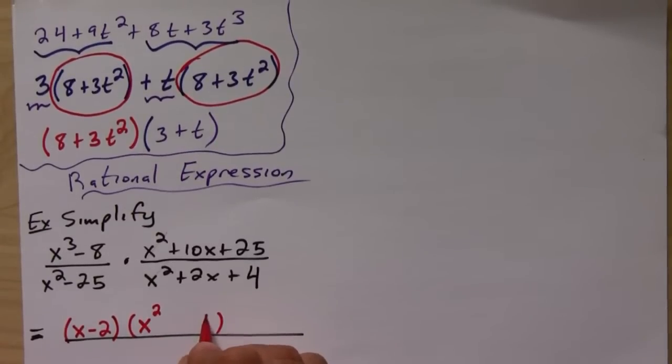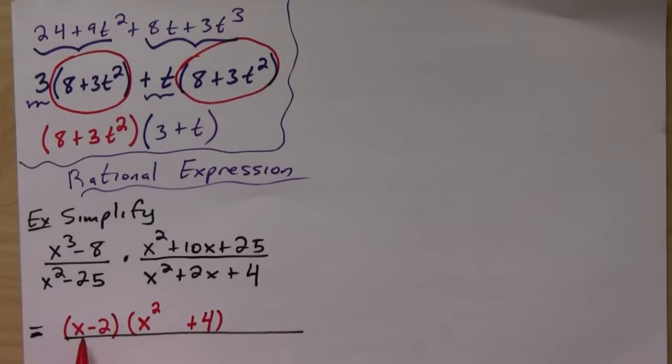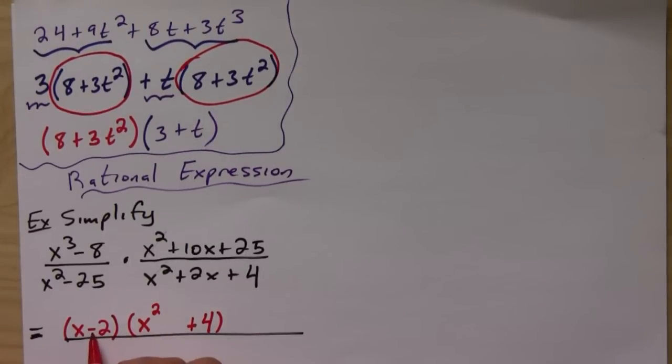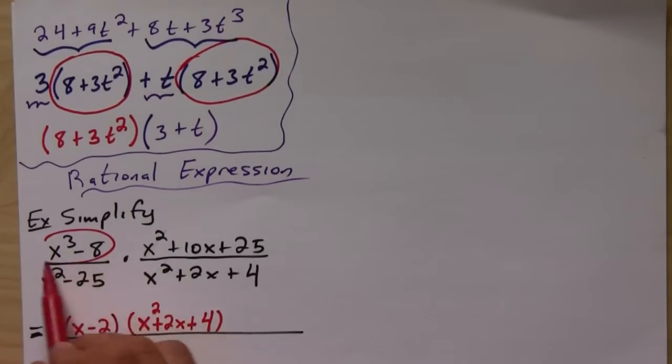...the first one would be x squared, the last one would be 2 squared or 4 positive, and then in the middle remember it's just one times the other with the opposite sign up here, so it would be plus 2x. Okay, so that's this first one.